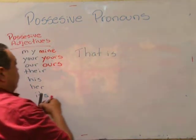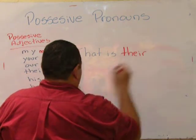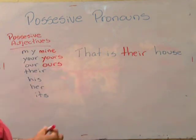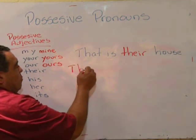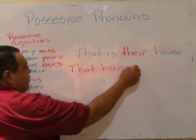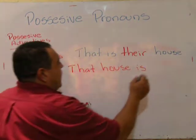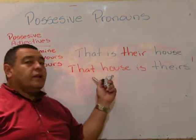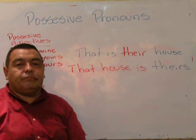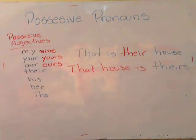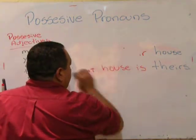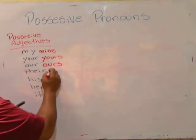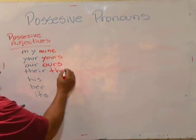That is their house. Say it a different way: that house is theirs. That is their house. That house is theirs. So the possessive pronoun for 'they' is 'theirs.'